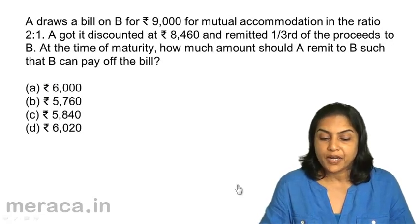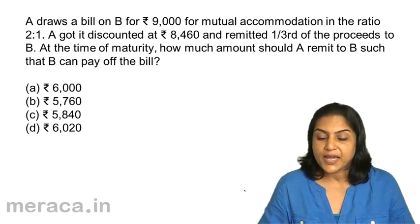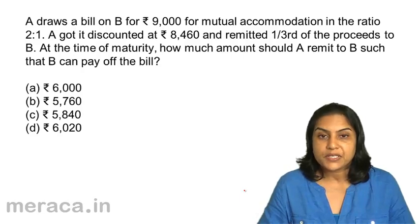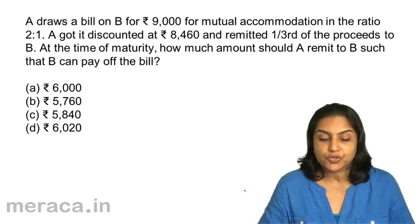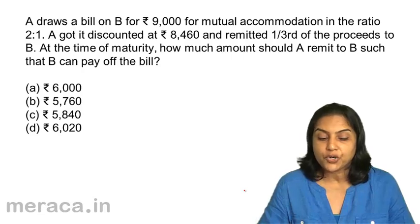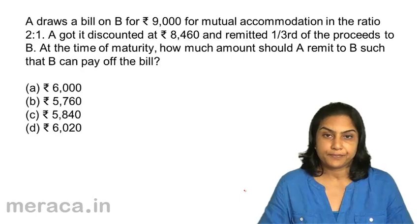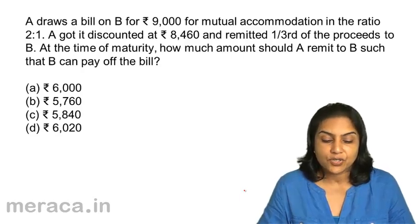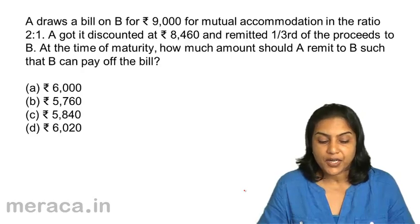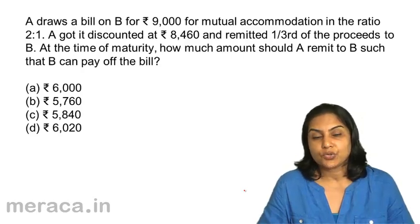A draws a bill on B for Rs.9,000 for mutual accommodation in the ratio 2:1. A got it discounted at Rs.8,460 and remitted one-third of the proceeds to B. At the time of maturity, how much amount should A remit to B such that B can pay off the bill? Options: A) 6,000, B) 5,760, C) 5,840, D) 6,020.